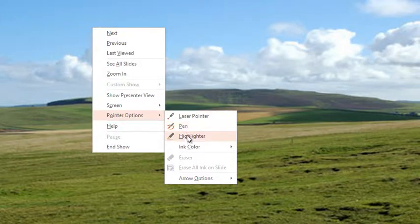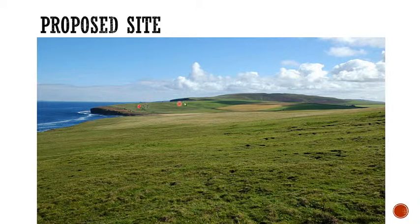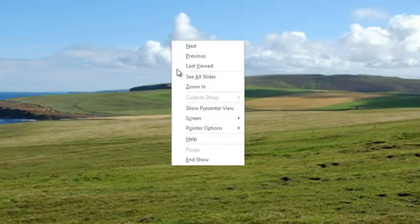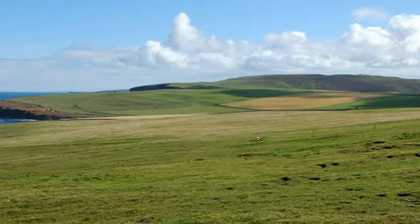Let me show you the laser pointer first. This really just emphasizes your cursor, and I can use the laser pointer to say, yes, the clubhouse will be located in this general area. If I actually want to take this further and draw, I go to pointer options and choose pen.